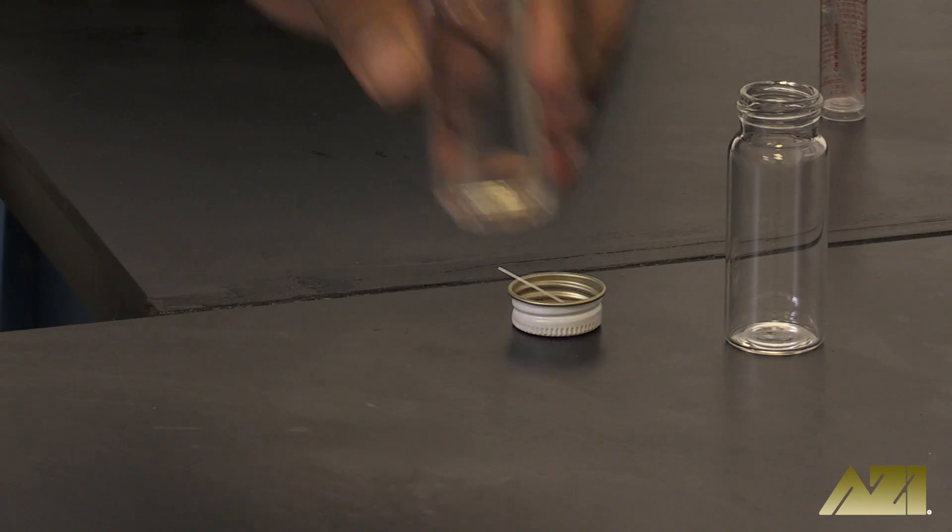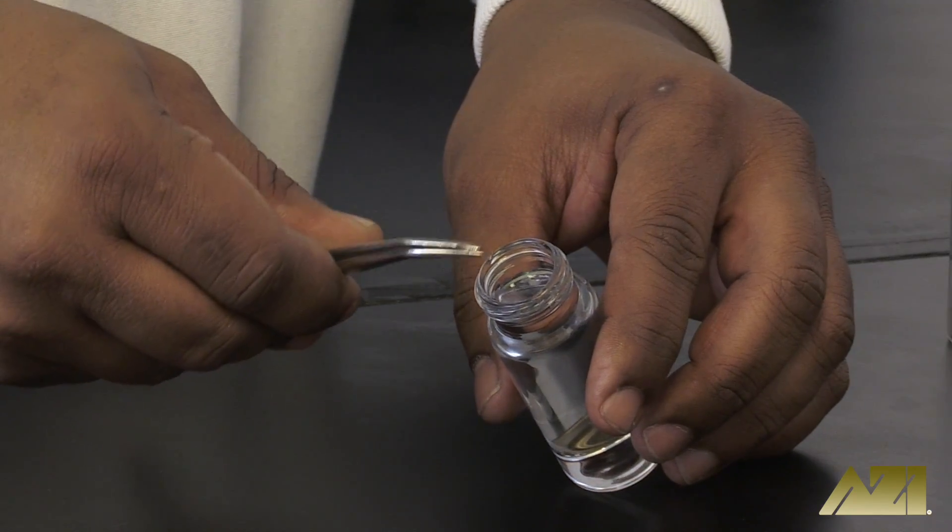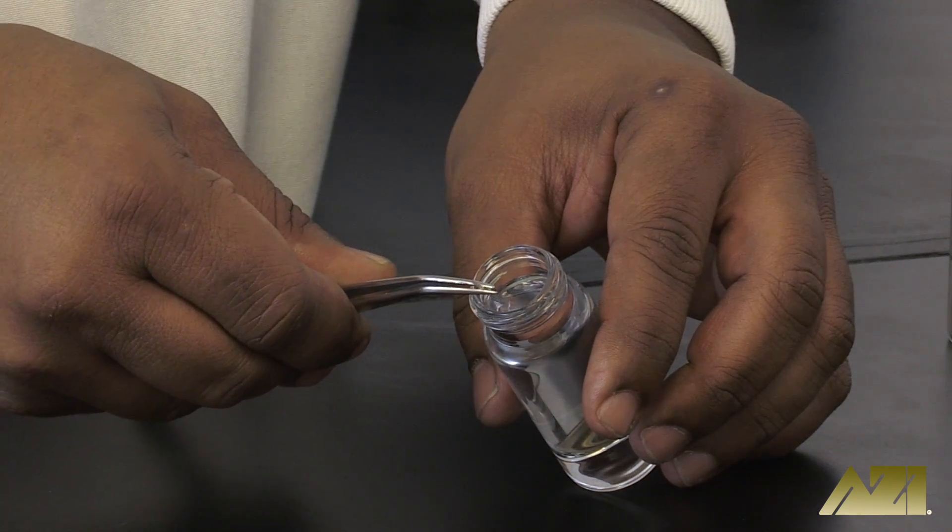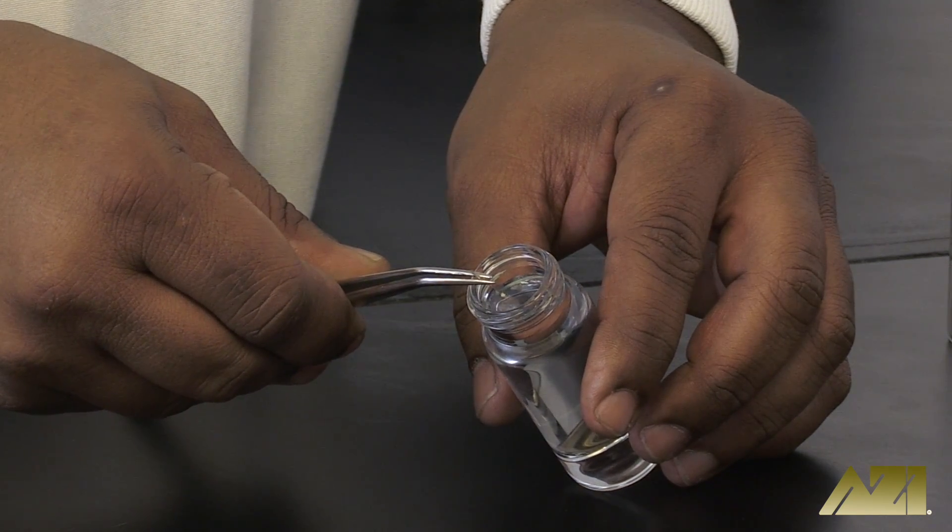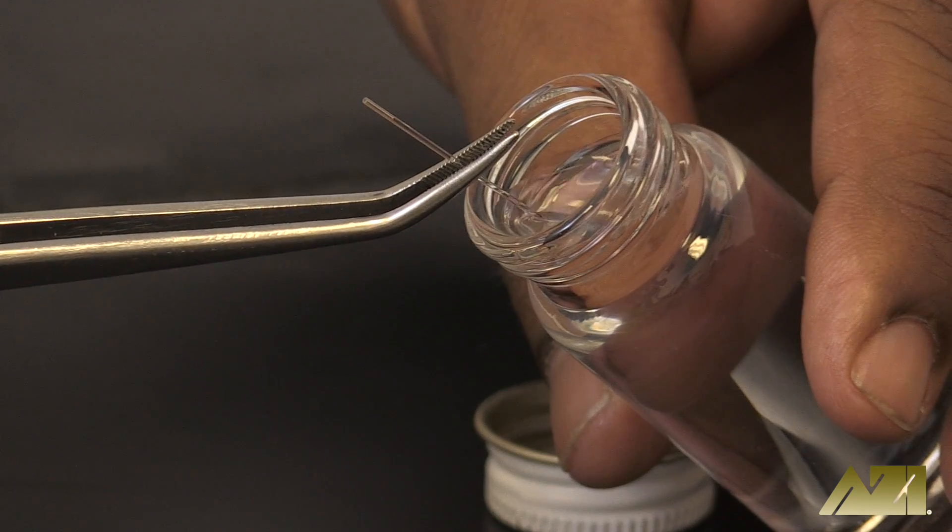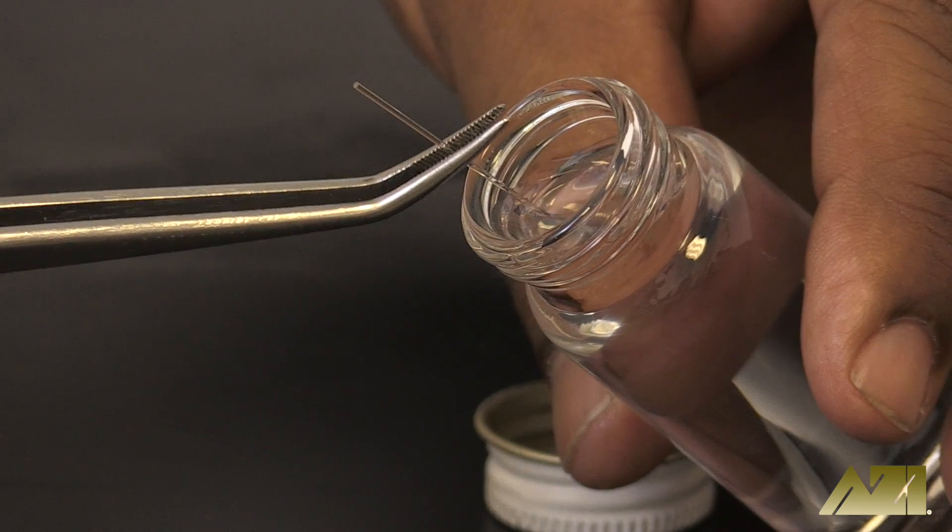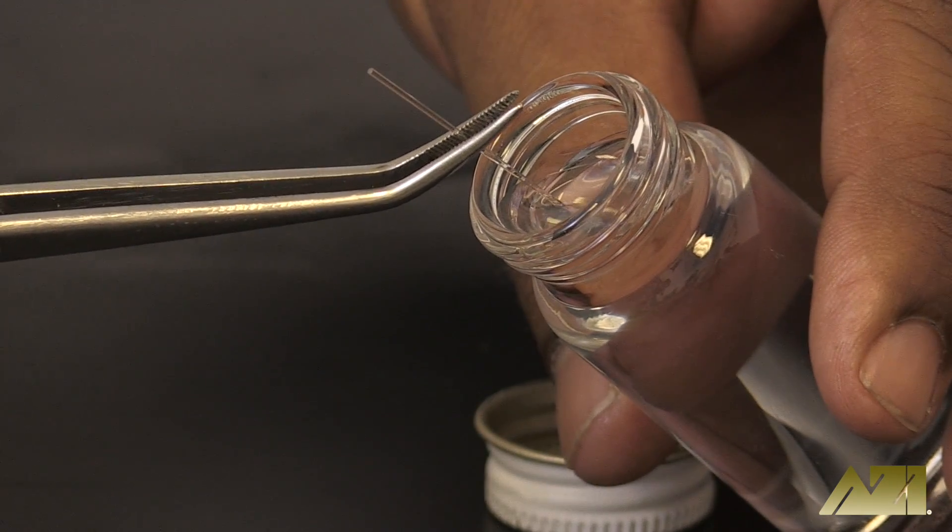Gently pick up the capillary with your tweezers and just barely dip one of its ends into the water. Tilting the microcaps slightly can help the water fill the capillary and can help you see the water level as it's being filled.